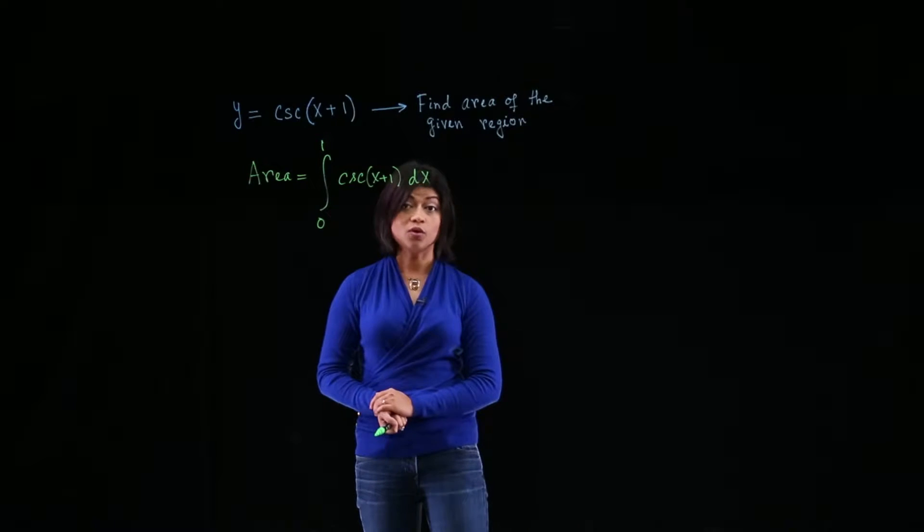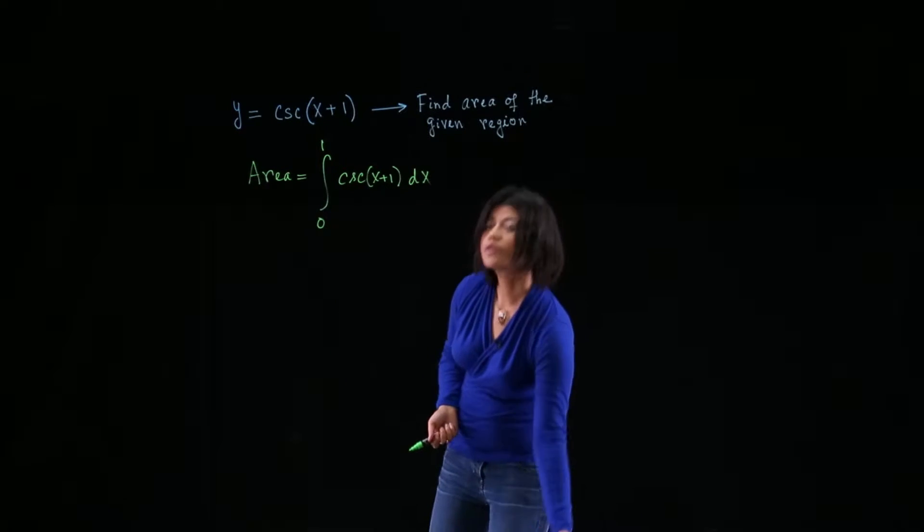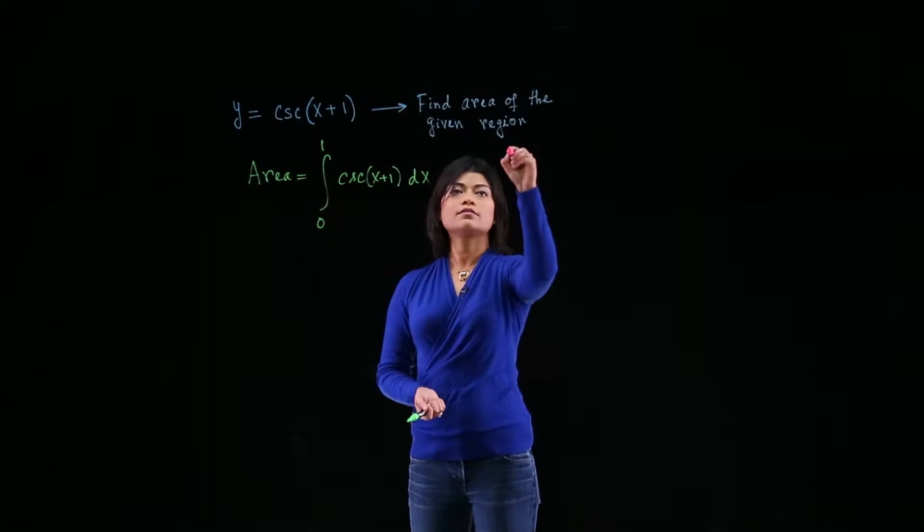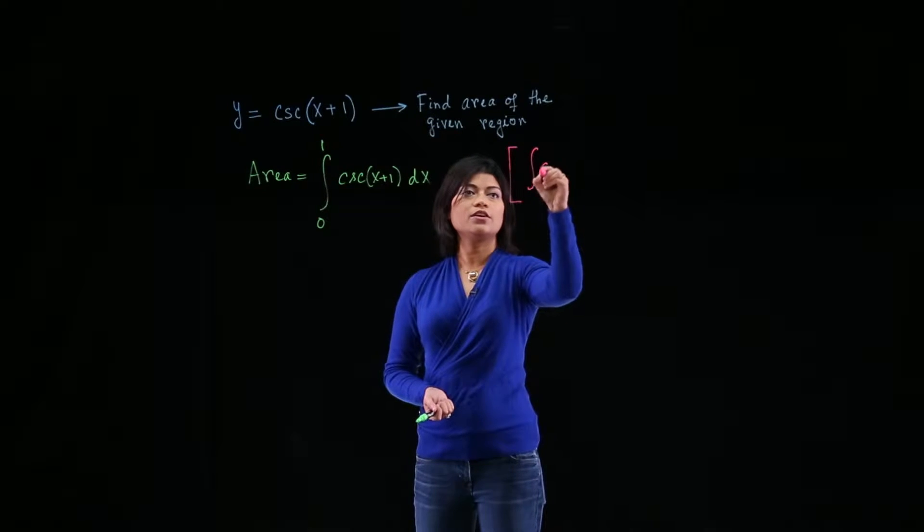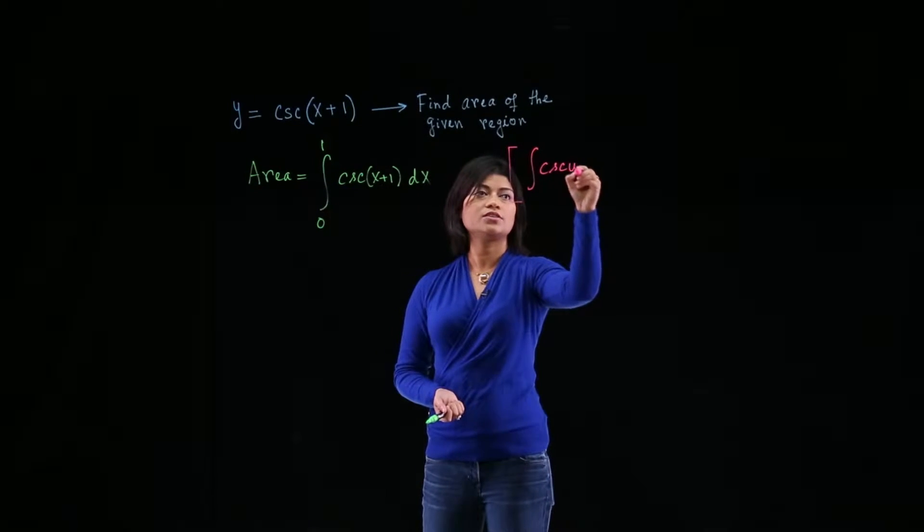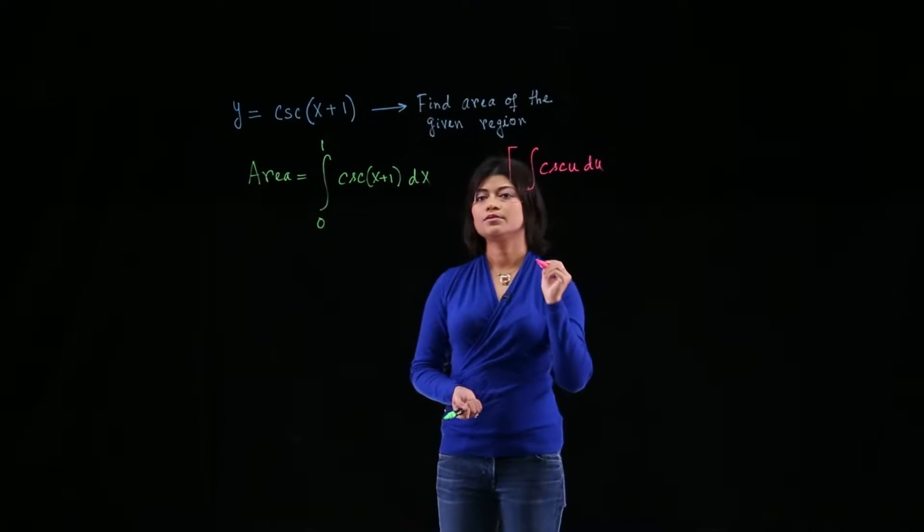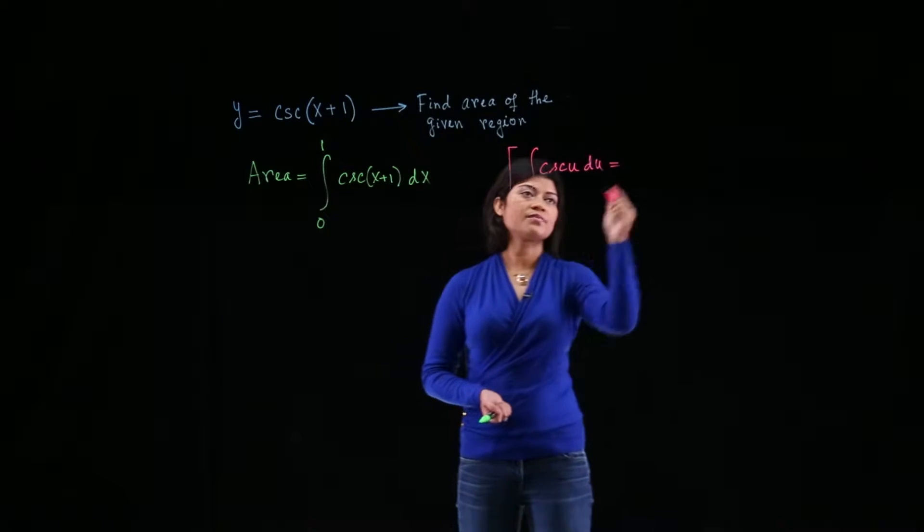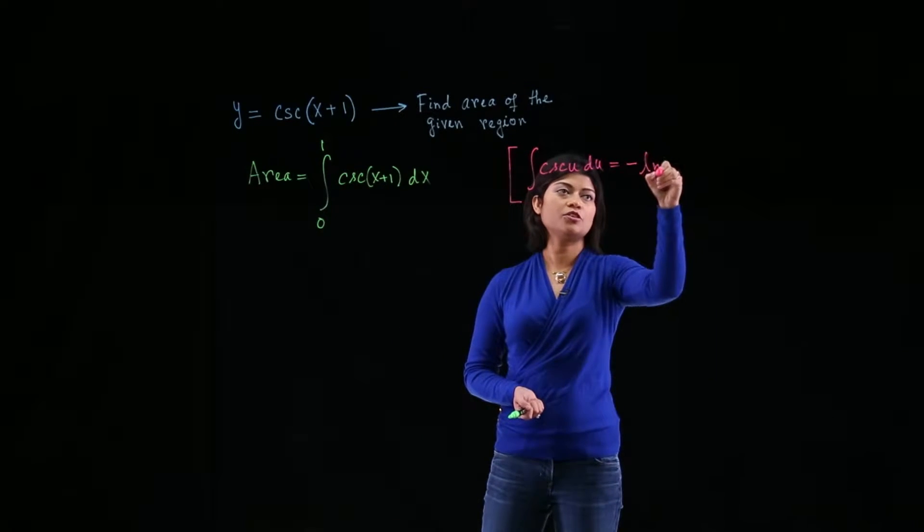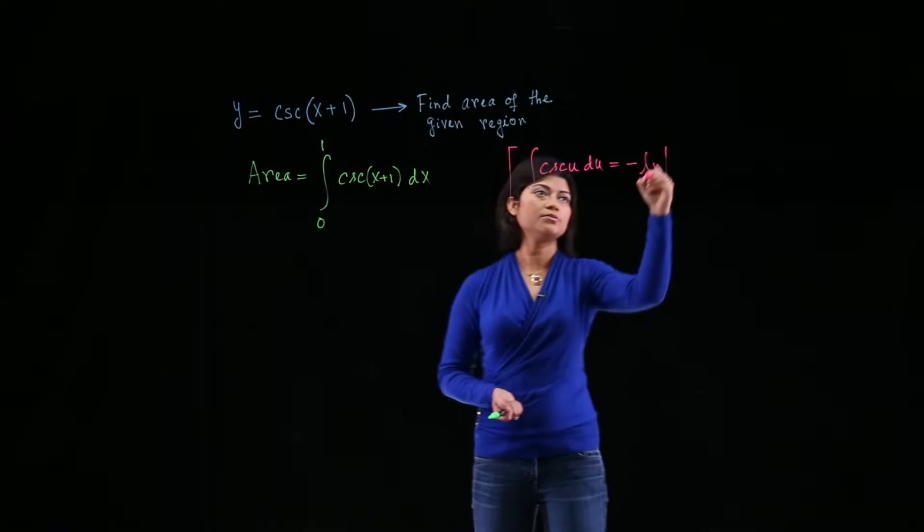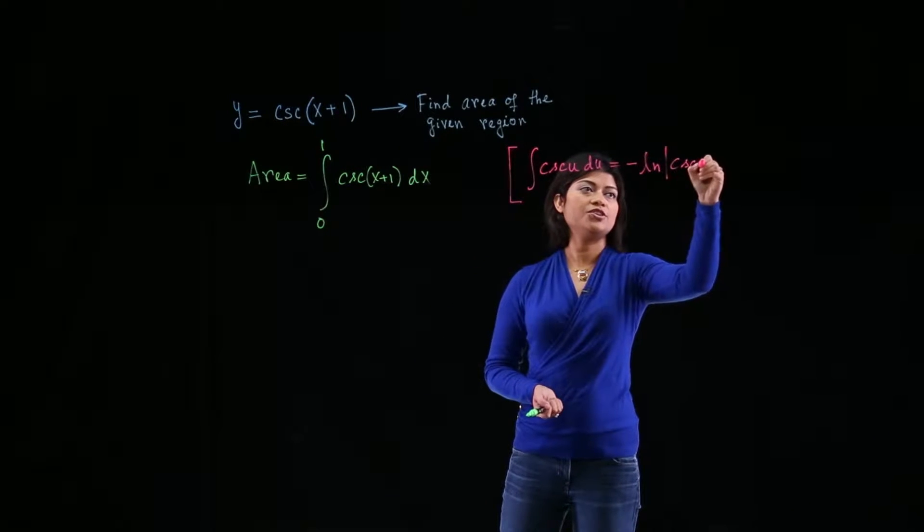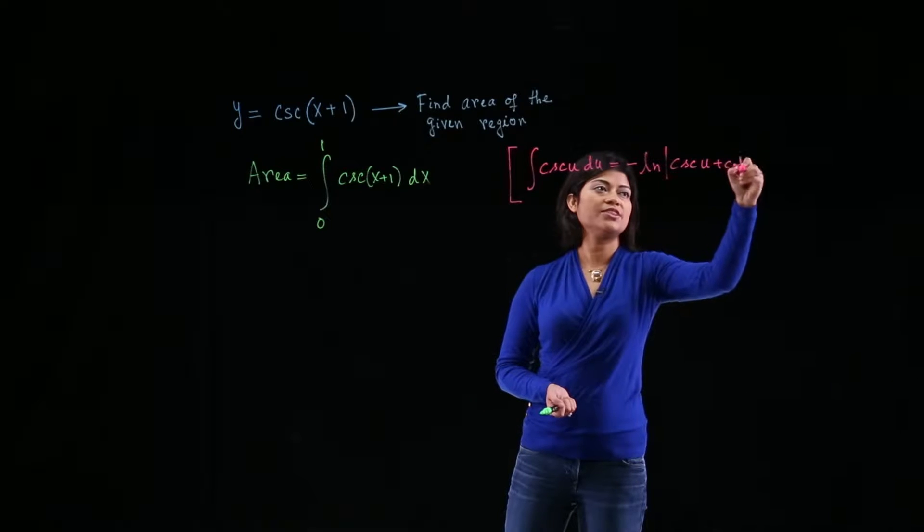So notice that this is a cosecant function. Recall that if you have integral of cosecant u du, then the antiderivative is negative natural log absolute value cosecant u plus cotangent u.